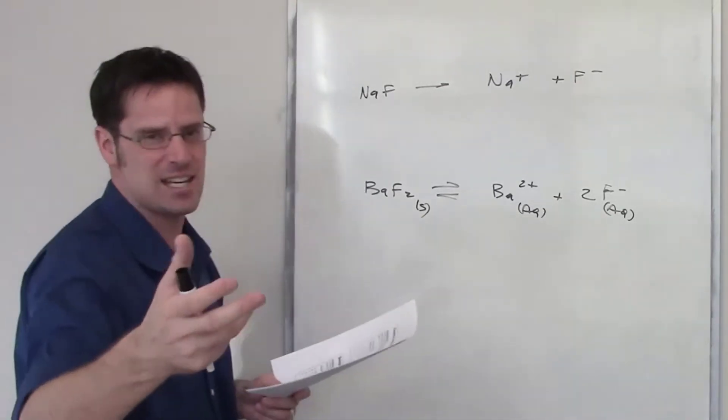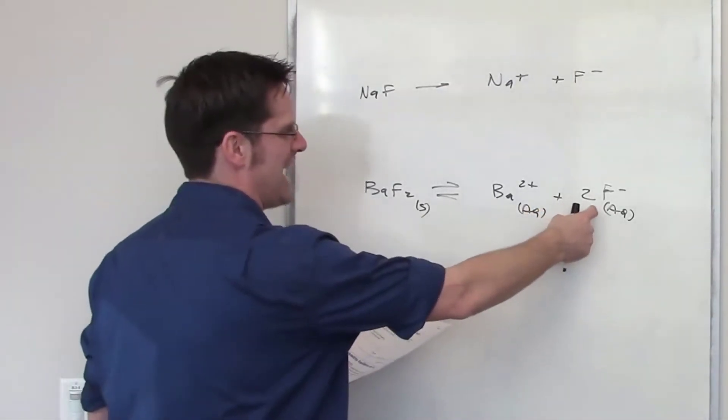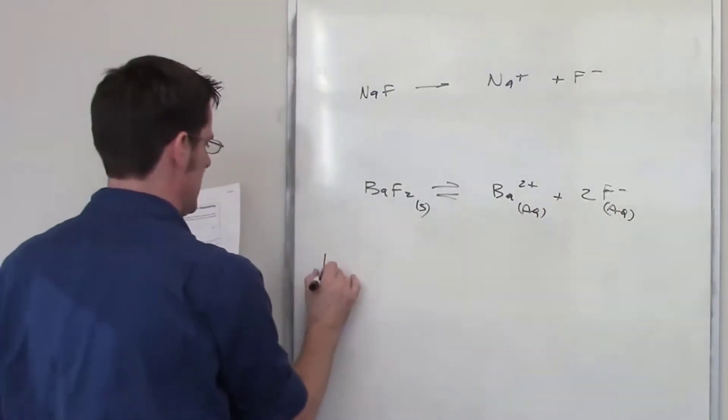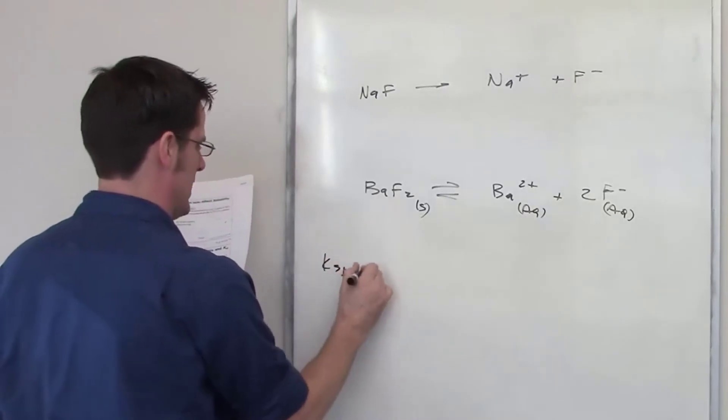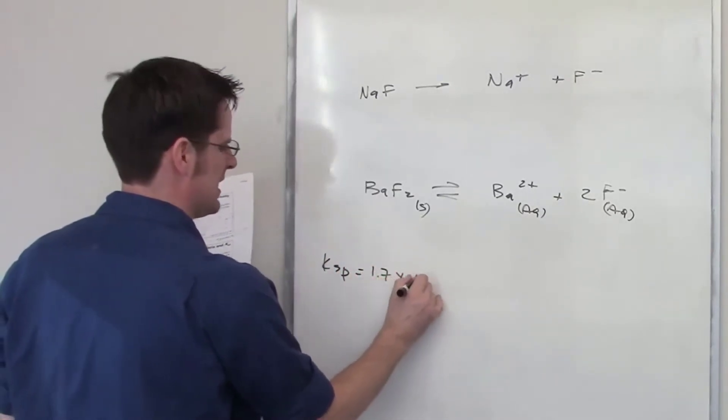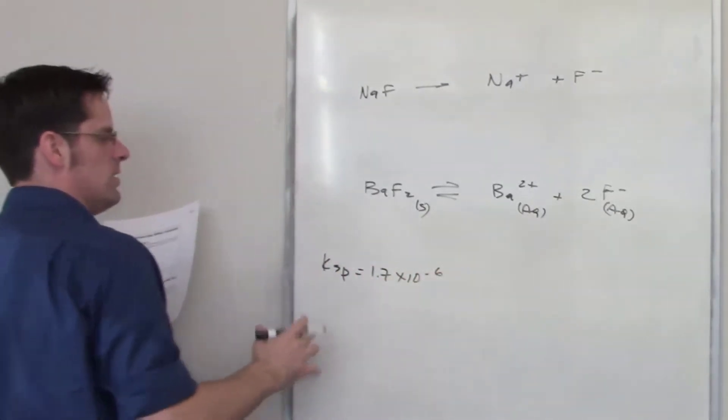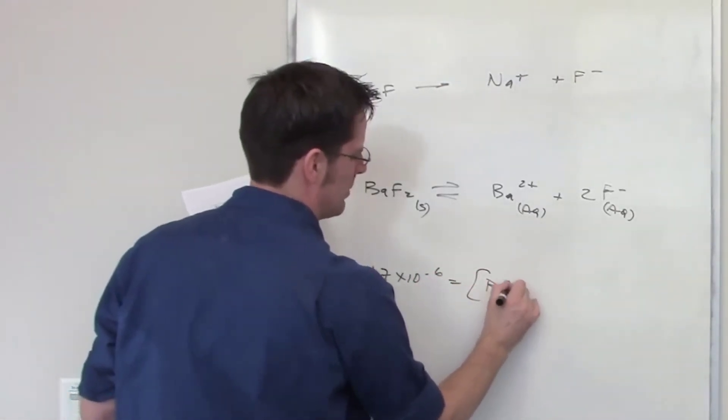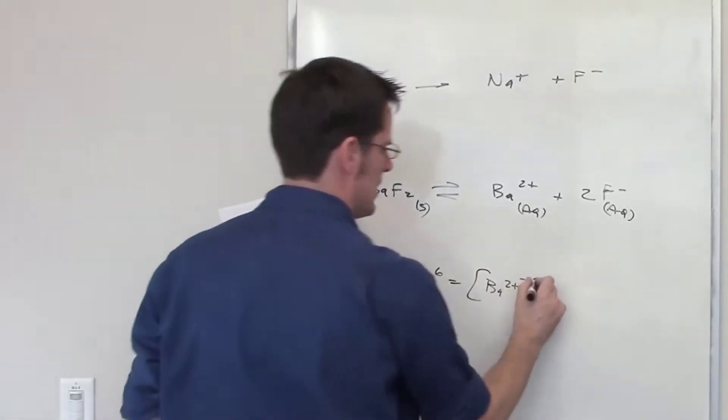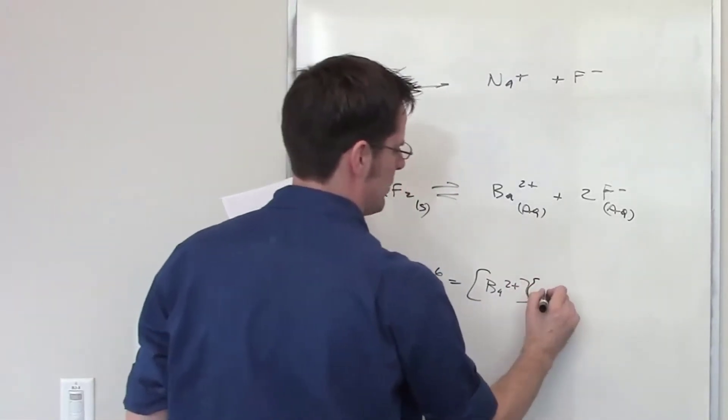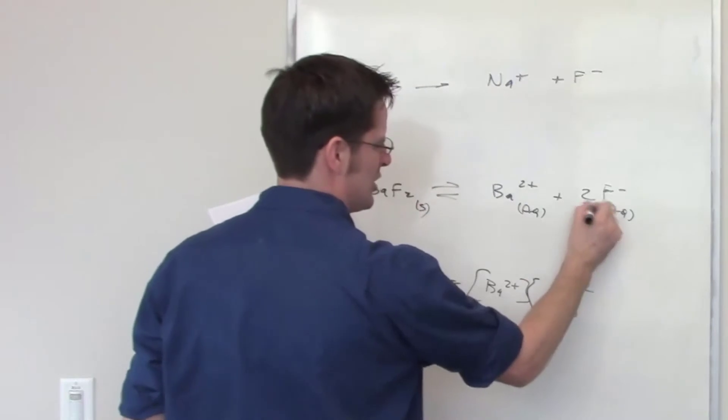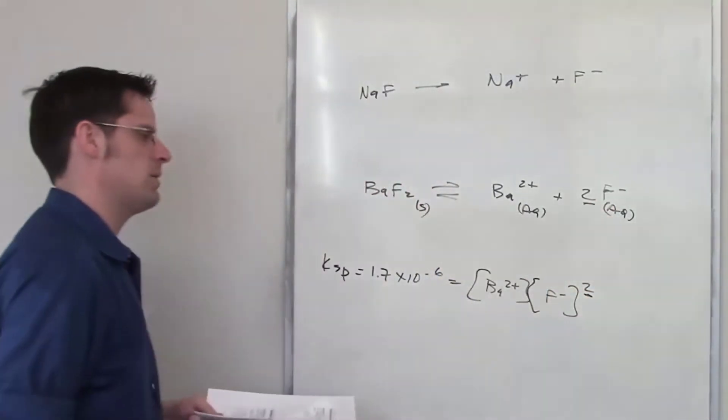So the question is asking me how much fluoride do I have to add to make that take effect? It gives me the Ksp for barium fluoride right here as being 1.7 times 10 to the negative 6. Now the Ksp value should be equal to this expression, the equilibrium concentration of barium 2 plus multiplied by the equilibrium concentration of fluoride minus squared. Because there's a 2 there, it becomes an exponent right there.